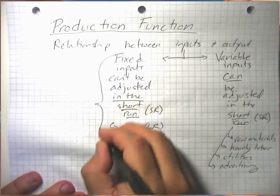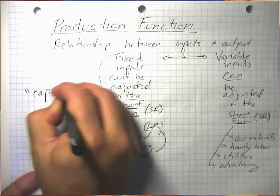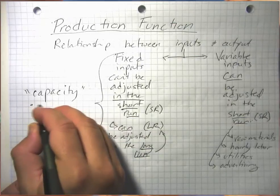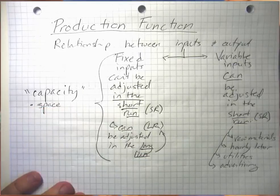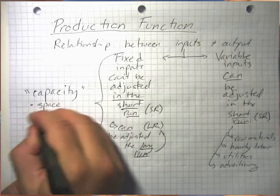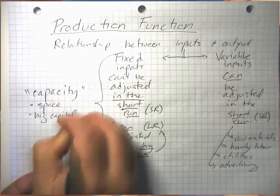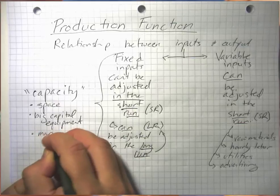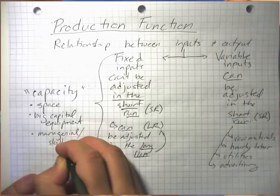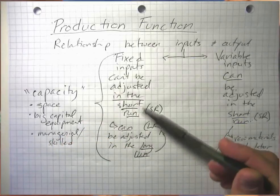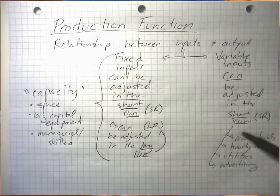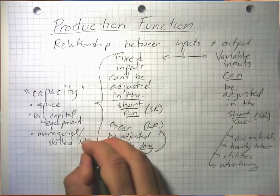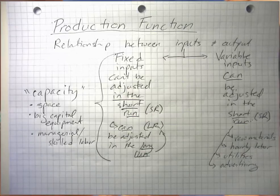Fixed inputs often fall under the idea of capacity. These are issues of space — literal capacity — like how many square feet of office or manufacturing space we have, or big capital equipment: how many pizza ovens or bulldozers do we have. Often managerial or skilled labor is more likely to be fixed in the short run, because it's harder to quickly adjust the number of capable managers or nurses at a hospital. It takes time to find, recruit, and onboard skilled workers.